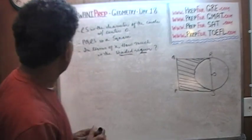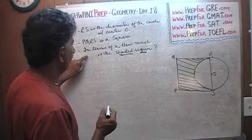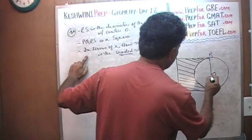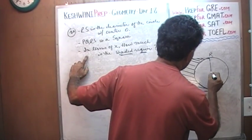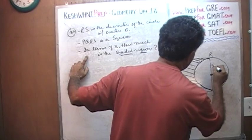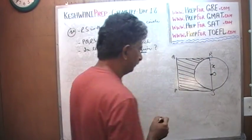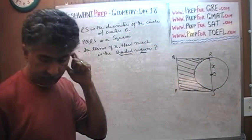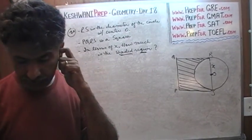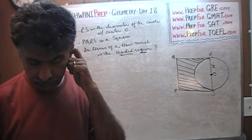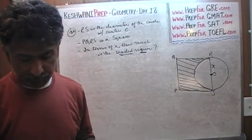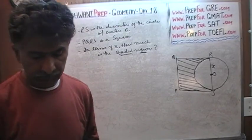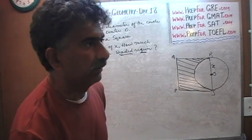One clarification I have not mentioned yet: R to O is X. Pause the video at this point, solve the problem, and then continue when you are done.